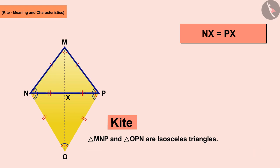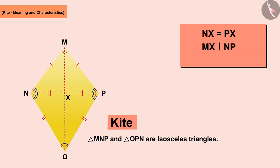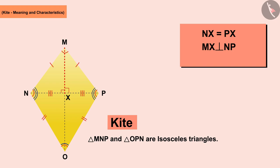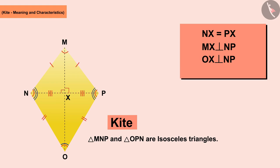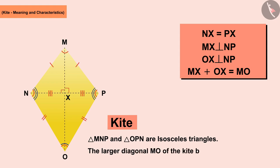We know that in an isosceles triangle, the median drawn from the vertex between the two equal sides to its opposite side is perpendicular to it. That is, in the isosceles triangle MNP, line segment MX bisects the arm NP. Similarly, line segment OX bisects the arm NP. Since MX plus OX equals MO, this leads to the conclusion that the larger diagonal of the kite bisects the smaller diagonal.